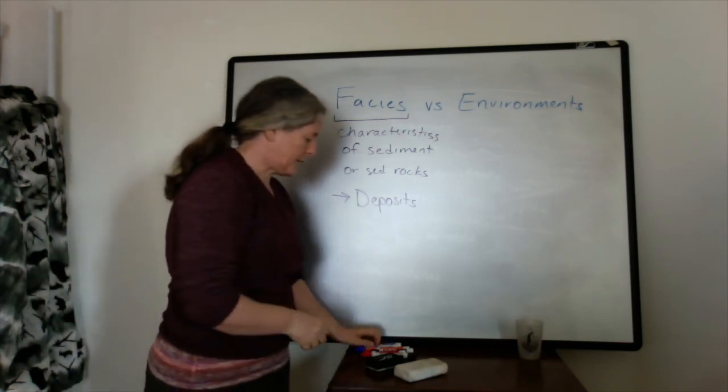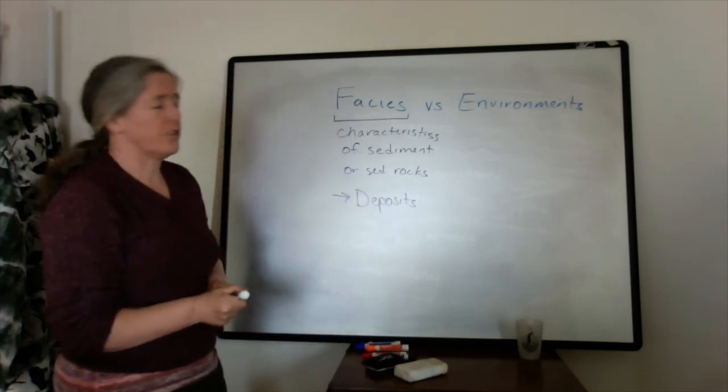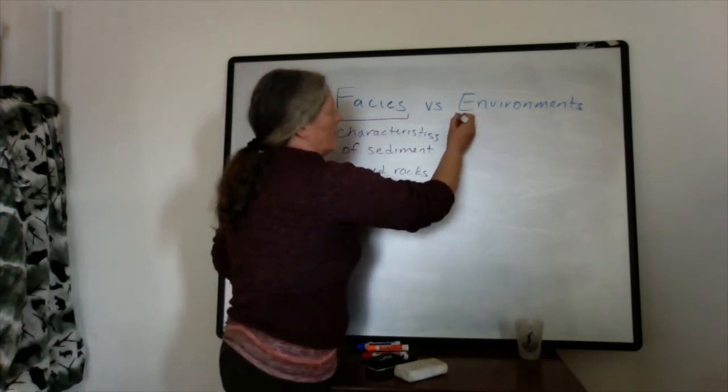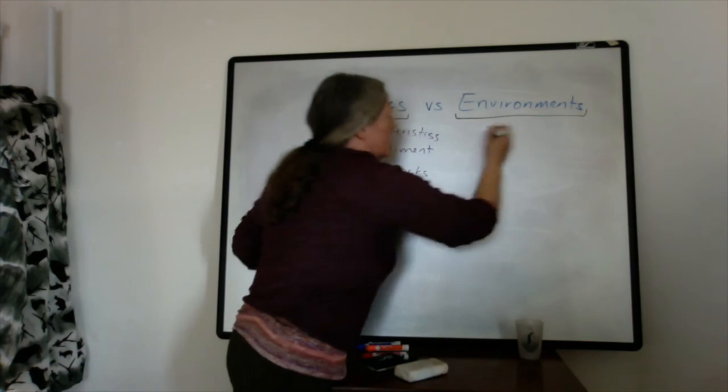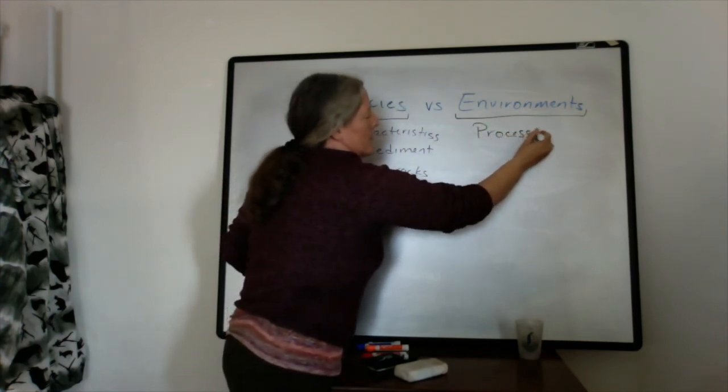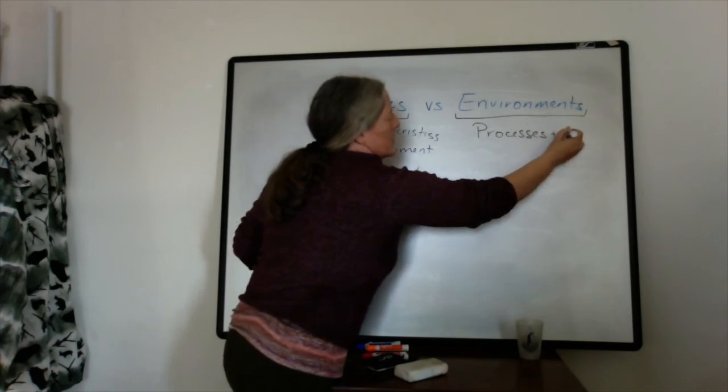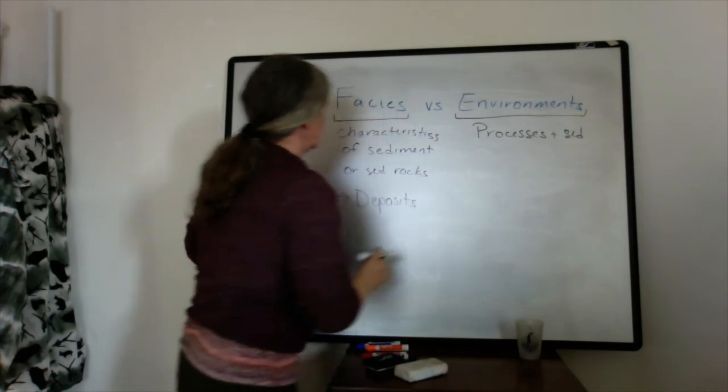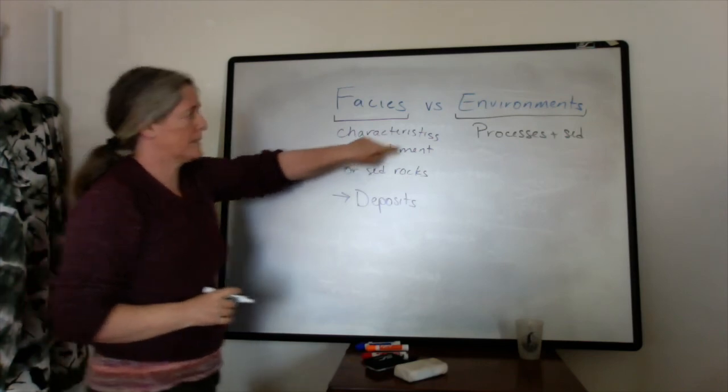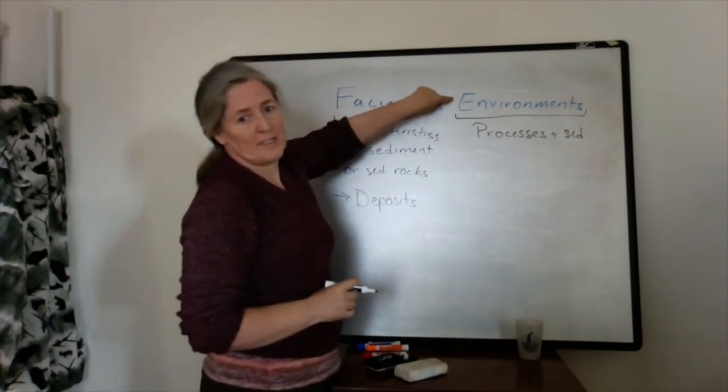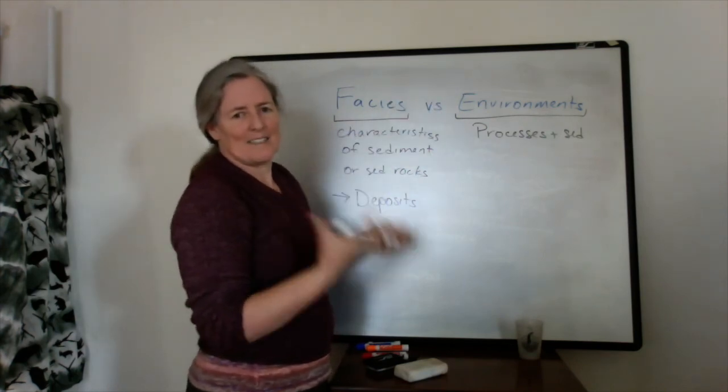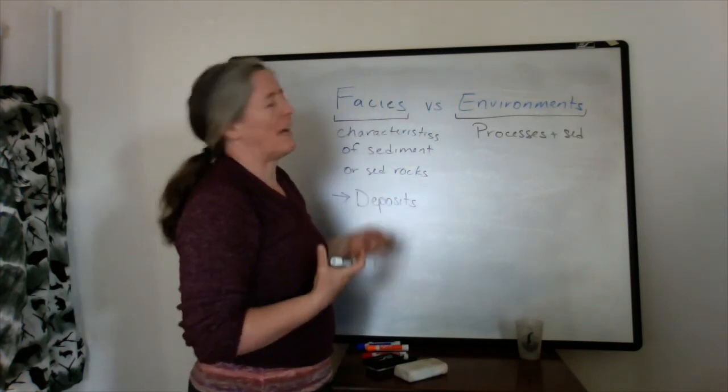In contrast, the depositional environment includes a lot of processes plus the sediment. Facies relate to sedimentary rocks. An environment can be interpreted from the sedimentary rocks, but an actual environment is something that's at the surface.